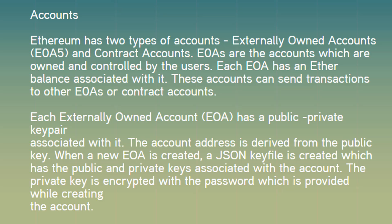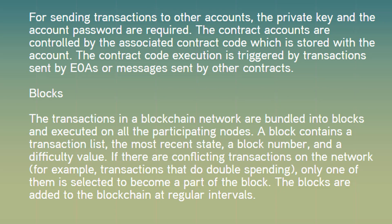The account address is derived from the public key. When a new EOA is created, a JSON key file is created which has the public and private keys associated with the account. The private key is encrypted with the password provided while creating the account. For sending transactions to other accounts, the private key and the account password are required. The contract accounts are controlled by the associated contract code stored with the account. Contract code execution is triggered by transactions sent by EOAs or messages sent by other contracts.